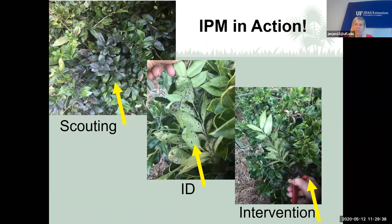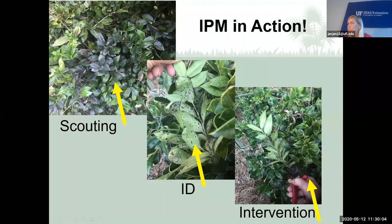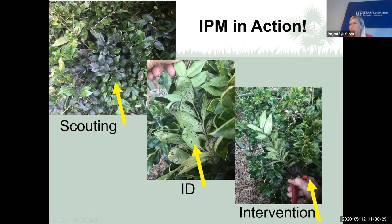Another physical IPM method is pruning out pest-prone limbs. For example, a ligustrum showing sooty mold — a sign of a piercing-sucking insect. Looking closely, you turn over the leaves and find scale insects — stationary and feeding on the leaf, excreting honeydew that causes the black sooty mold on top. If it's confined to only one stem, the easiest fix is to just cut off that one stem. That's a great way to physically remove insects too.